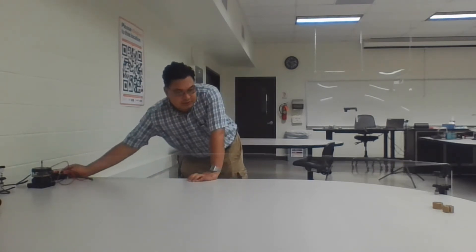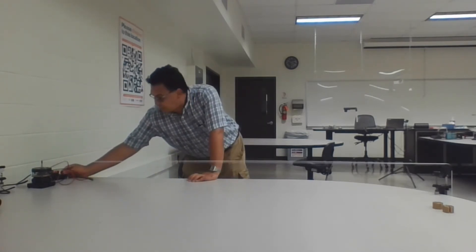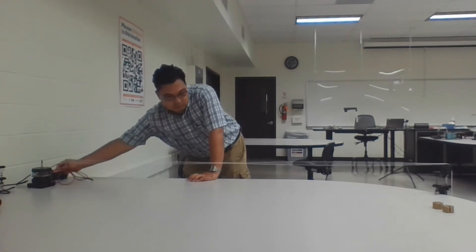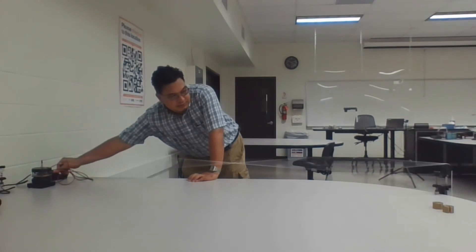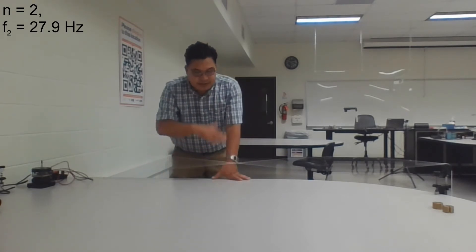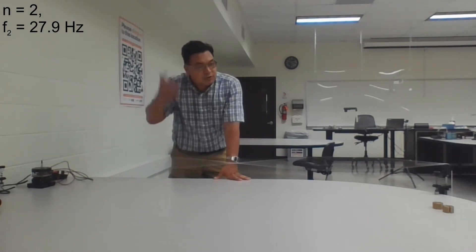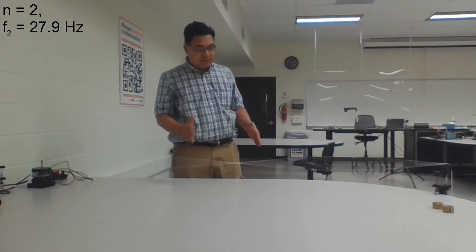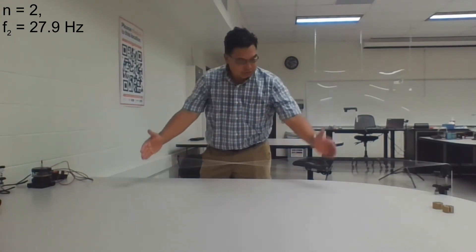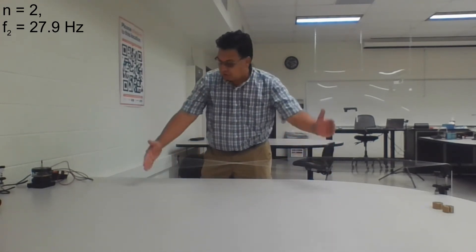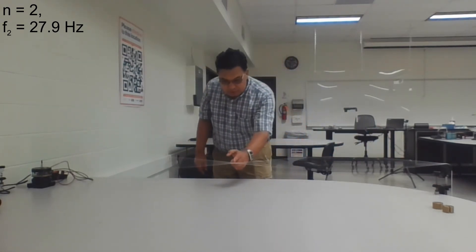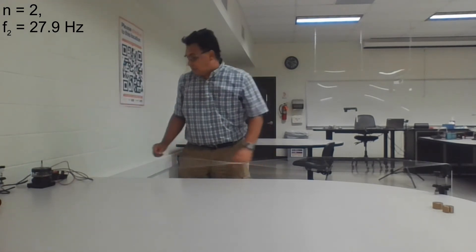As you can see, this is the second harmonic — the next possible frequency at which you can resonate the string. The second harmonic has two anti-nodes; this maximum vibration is called an anti-node. So two anti-nodes and three nodes: one node here, one node here, and one node somewhere in the middle.